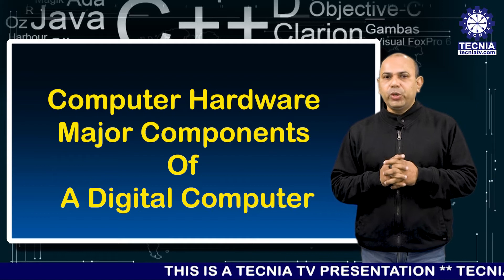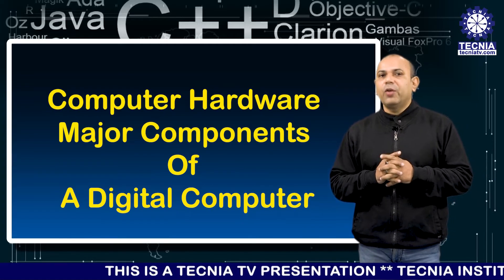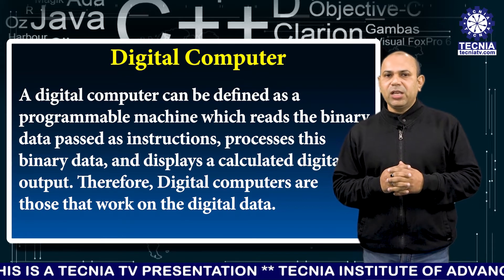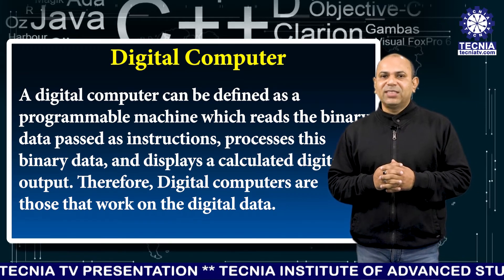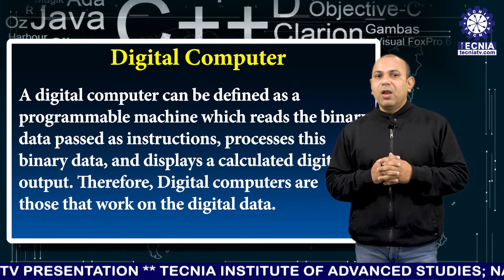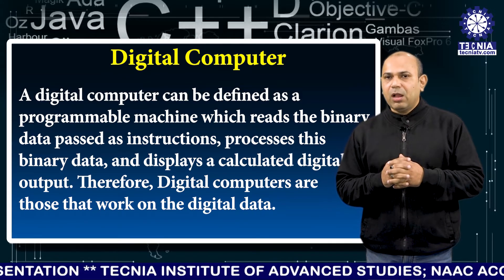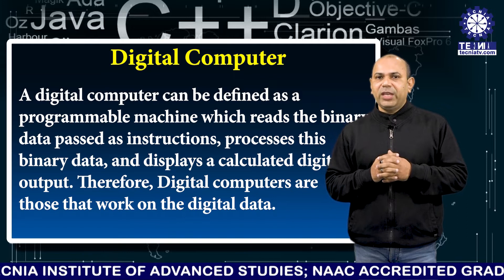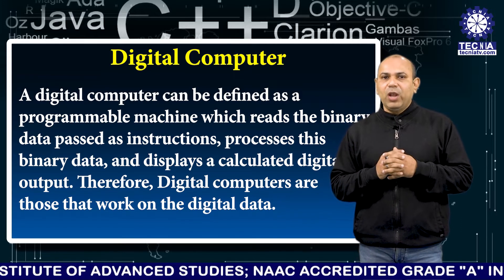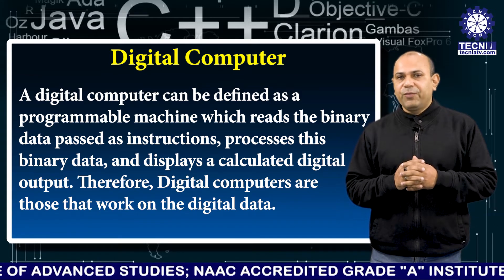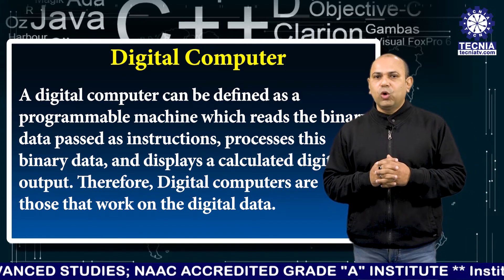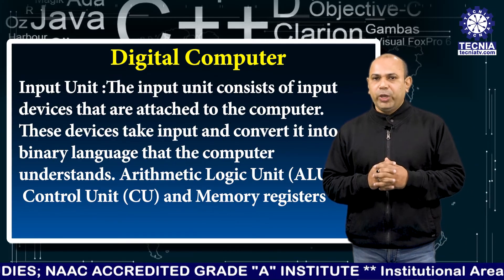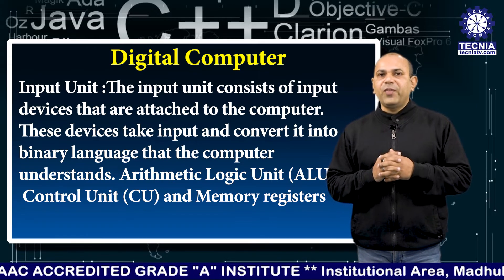A digital computer can be defined as a programmable machine which reads the binary data, passes instructions, processes this binary data, and displays a calculated digital output. Therefore, a digital computer works on digital data.